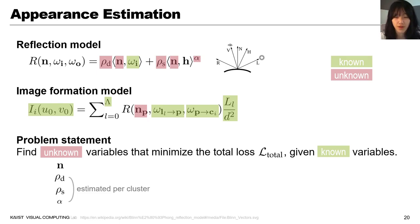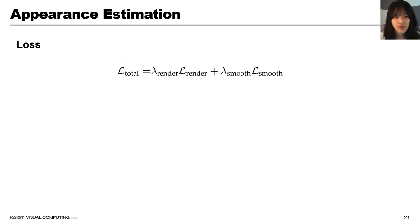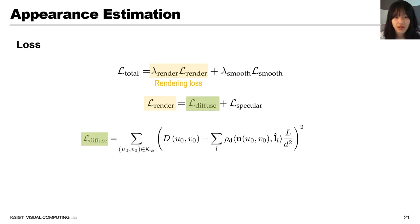For the sake of practicality, we cluster surface points and assume shared diffuse albedo, specular albedo, and smoothness per cluster in order to increase the number of angular observations. Total loss is a weighted sum of rendering loss and normal smoothness loss.